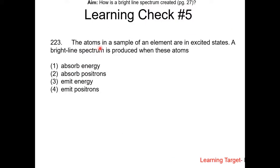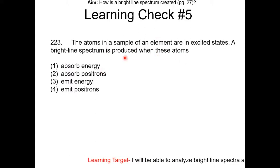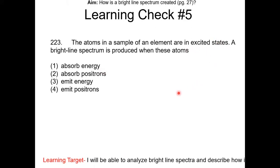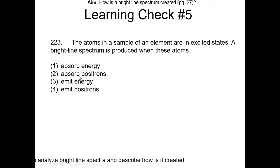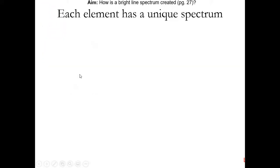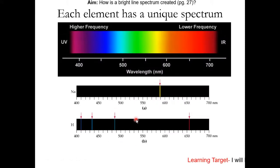Learning check number five: the atoms in a sample of an element are in the excited state. A bright light spectrum is produced when these atoms do what? Pause the video and resume once you have the answer. Since they are in the excited state, they must go back to the ground state and release energy in the form of light in order to produce a bright light spectrum — so it must emit energy. Choice three. Just to review: each element has its own unique spectrum.